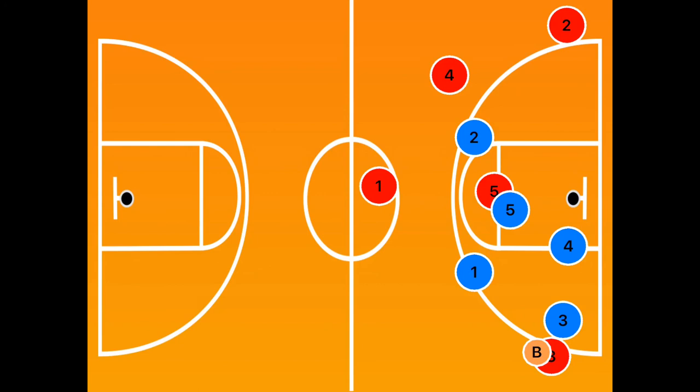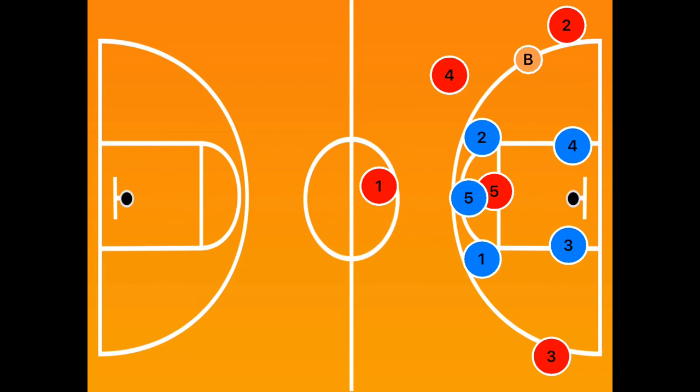So the thing to remember for four and three: if the ball's over here, three, you're coming all the way across. If the ball's over here, four, you're coming all the way across.